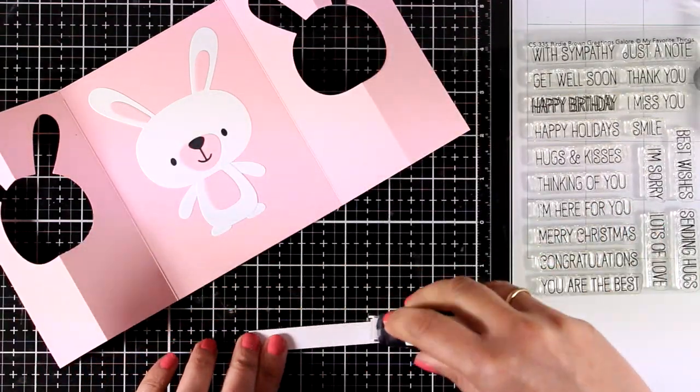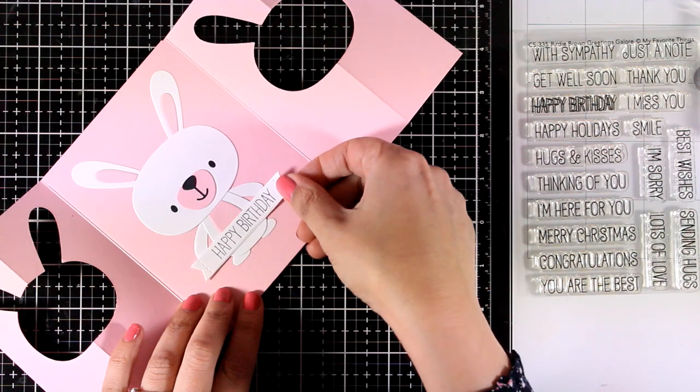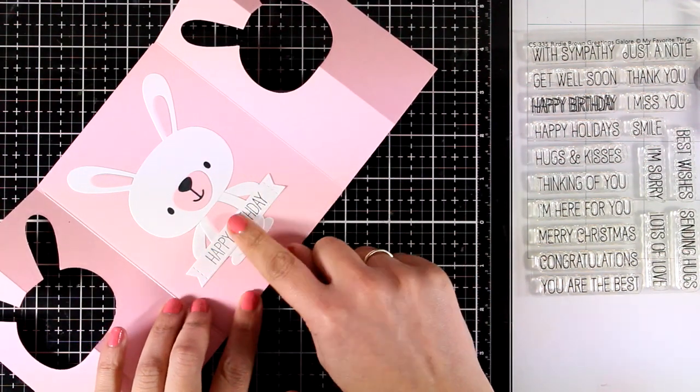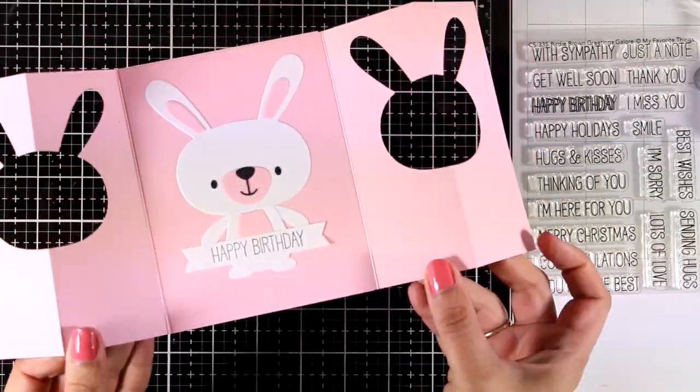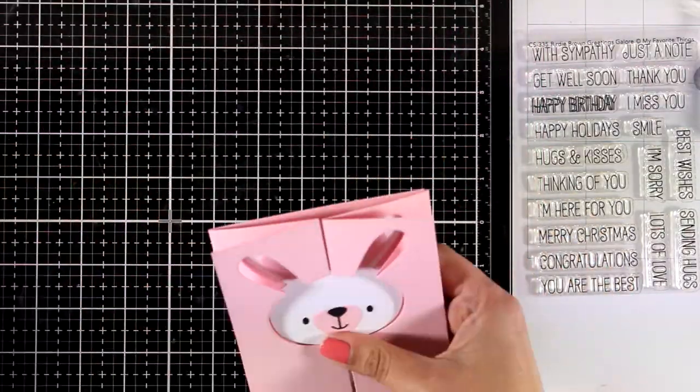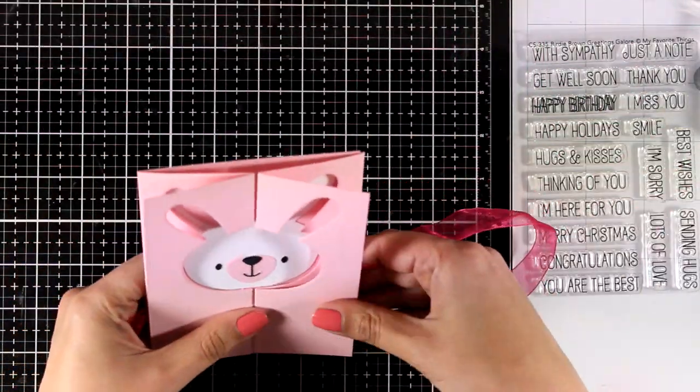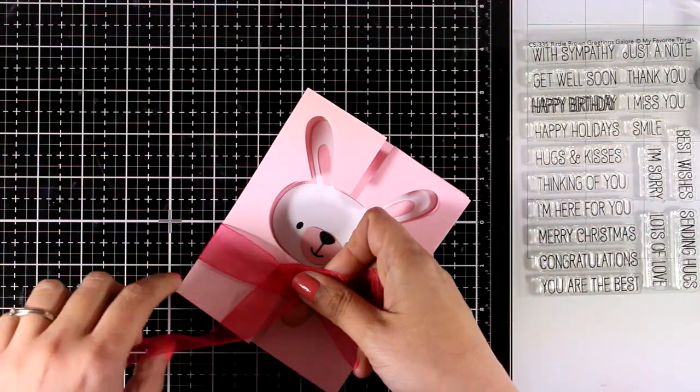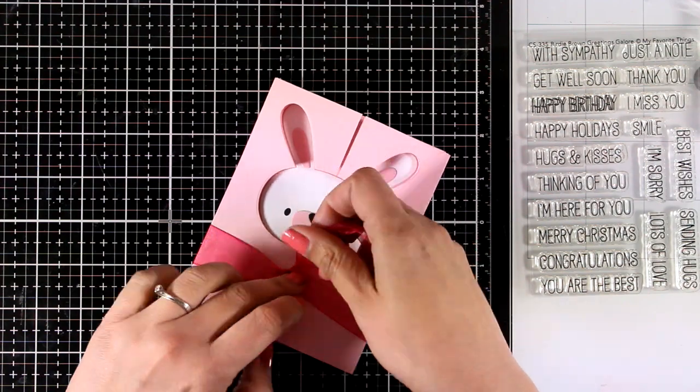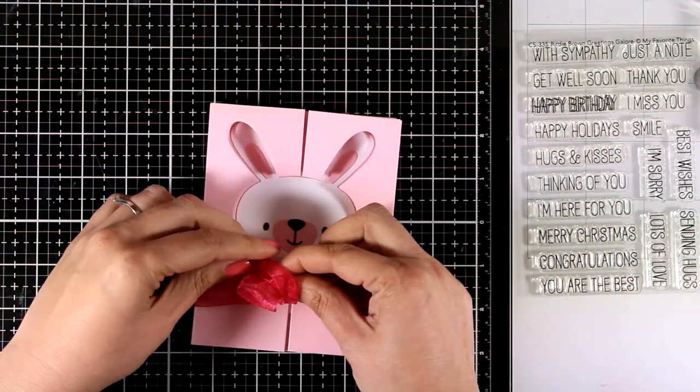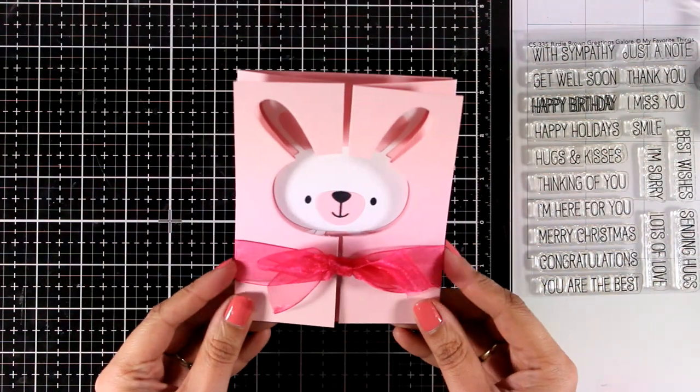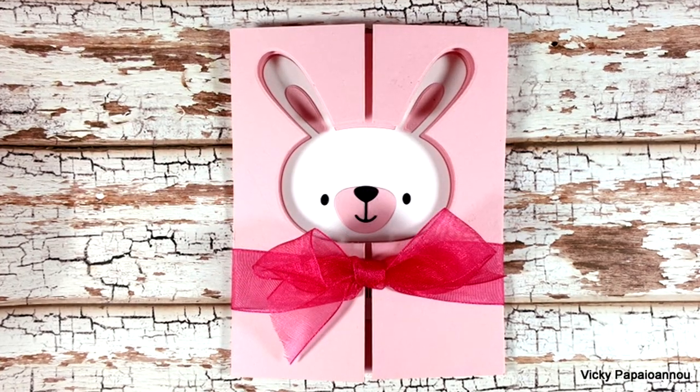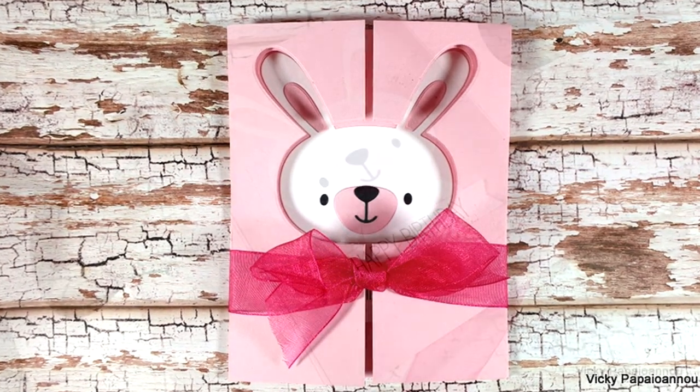Mine is holding a little banner that says Happy Birthday. The sentiment comes from the stamp set which is called Birdie Brown Greetings Galore—it's packed with greetings for every occasion. My super adorable card is ready. I'm going to keep everything closed with a ribbon. Of course you can create a little band to keep your card closed, either with cardstock or with vellum. This design is really easy to make and recreate, but it creates a really wow factor for the recipient, especially since you end up having bunny windows on both flaps.